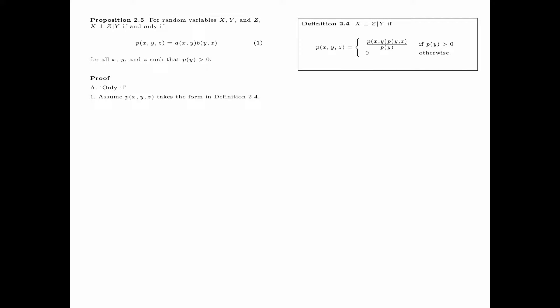We are going to prove Proposition 2.5 in two parts. First, we prove the only-if part. Assume that p takes the form in Definition 2.4. For all x, and for all y such that p(y) is bigger than 0, we let a(x,y) equal p(x,y) divided by p(y). For all y such that p(y) is bigger than 0 and for all z, we let b(y,z) equal p(y,z).